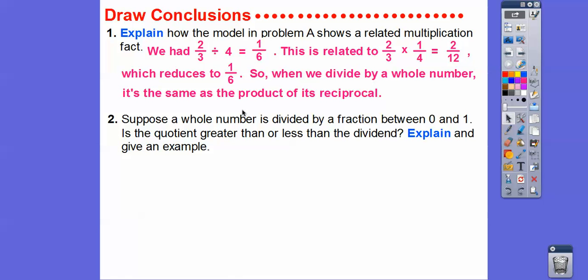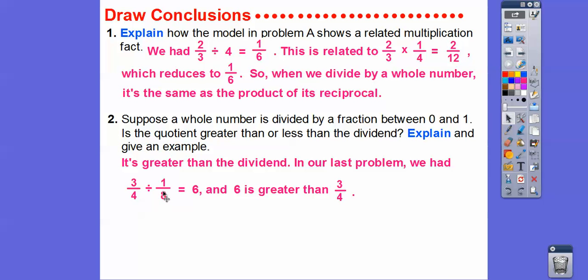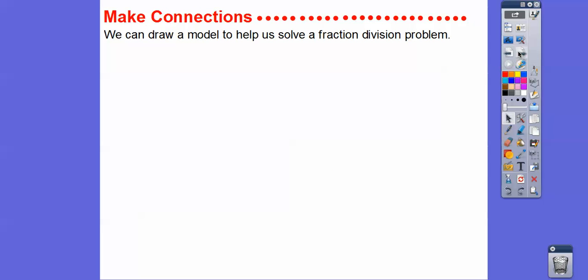Suppose a whole number is divided by a fraction between zero and one. Is the quotient going to be greater than or less than the dividend? Any number divided by a fraction between zero and one gives a number that's bigger than what we were dividing by — the quotient is greater than the dividend. You can see that one-eighth is between zero and one, so the quotient is bigger than the dividend, as long as the divisor is smaller than one.